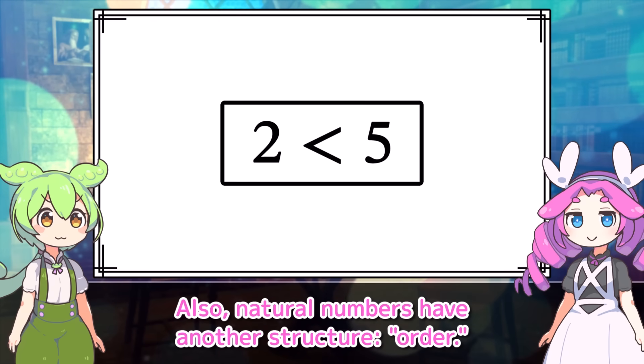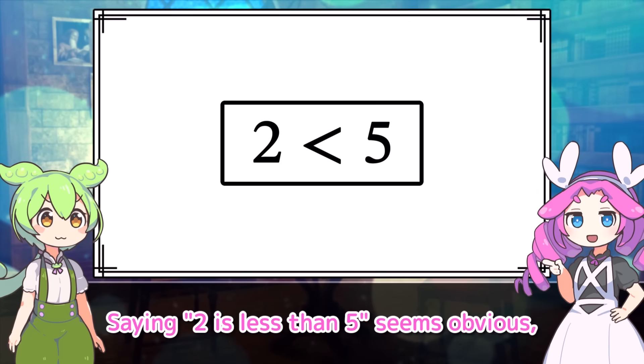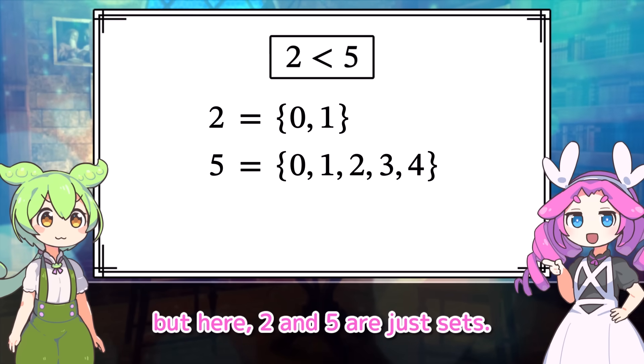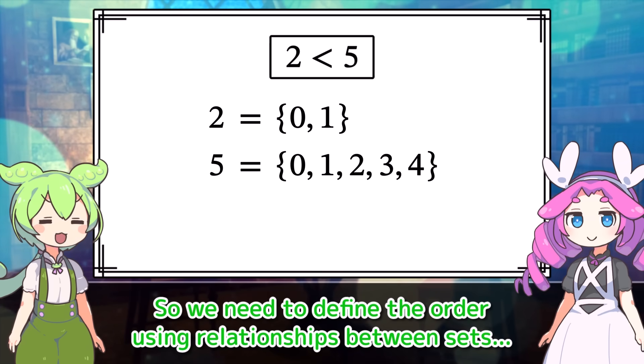Also, natural numbers have another structure, order. Wait, do we also have to define the order from scratch? Exactly. Saying two is less than five seems obvious. But here, two and five are just sets. So the meaning of that inequality hasn't been defined yet. So we need to define the order using relationships between sets.